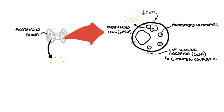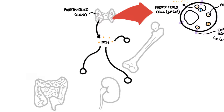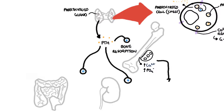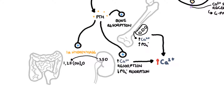Parathyroid hormone's main goal is to increase blood calcium levels, and it does this by targeting three main organs. In the bones, parathyroid hormone promotes bone resorption through the action of osteoclasts — the bone eating cells — which release calcium and phosphate into the blood. Parathyroid hormone also targets the kidneys, increasing calcium reabsorption but decreasing phosphate reabsorption. It also targets an enzyme called 1-alpha-hydroxylase, promoting the conversion of calcidiol to calcitriol, the active form of vitamin D, known as 1,25-dihydroxycholecalciferol, which increases calcium and phosphate absorption in the gut.